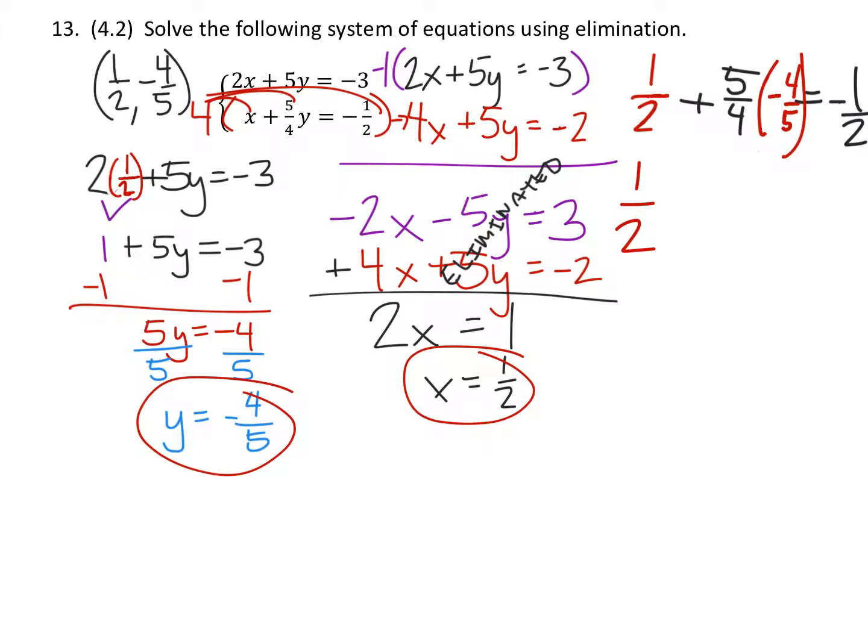And so we'll have 1 half plus that 5 fourths times negative 4 fifths would be a minus 1. It should equal a negative 1 half, does it? Well, we could take that 1 and replace it then with a 2 over 2, which would indeed give us a negative 1 half equals negative 1 half.